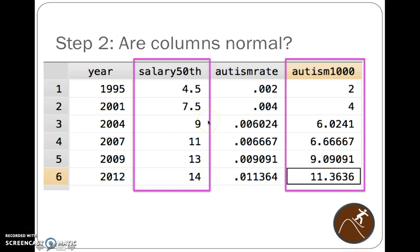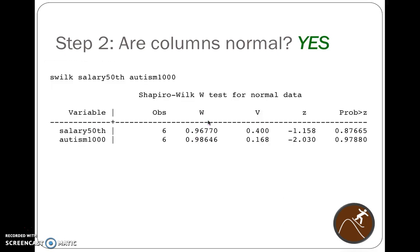We have these two columns of data. The first thing we had to do was ask ourselves: are these data normally distributed or not? If either column is not, then we have to use Spearman correlation. If they're both normal, then we can use Pearson correlation. So we check to see if the core columns are normal.